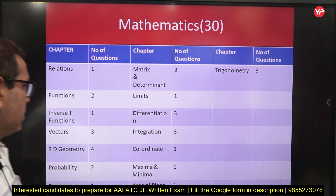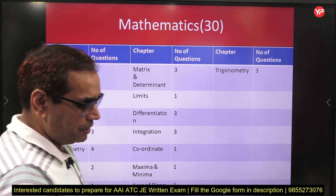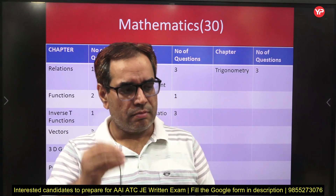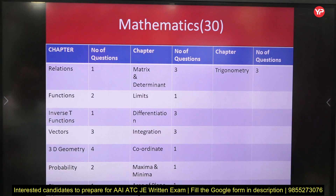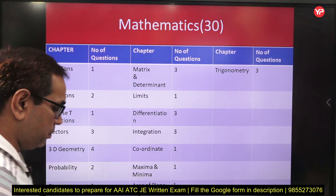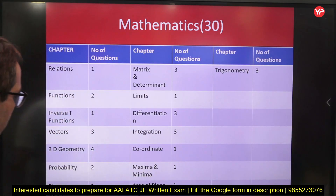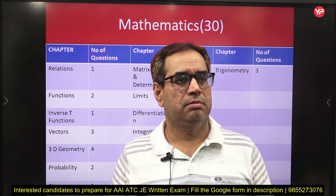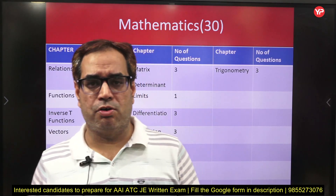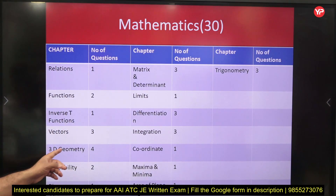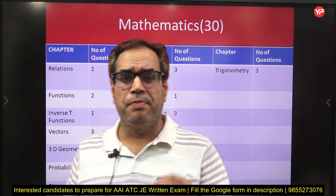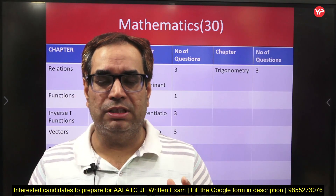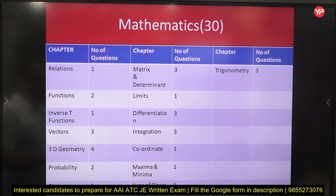Vectors is a very very important chapter — three questions were there, and on average three to four questions are definitely asked from vectors across all previously conducted papers. Questions are generally based on cross product, dot product, and magnitude of a vector. Three-dimensional geometry is the most important topic for this exam — always four to five questions come from 3D geometry. You have to prepare both straight lines and planes.